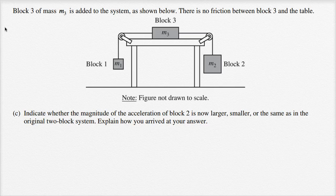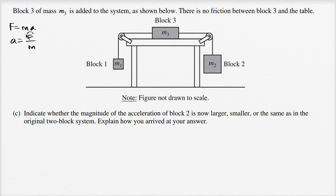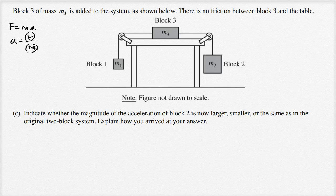We know that force is equal to mass times acceleration, or acceleration is equal to force divided by mass. Our net force is the difference between the weights of the blocks, but now we're going to be moving more aggregate mass — m1 plus m2 plus m3. And so you're going to have a smaller acceleration.